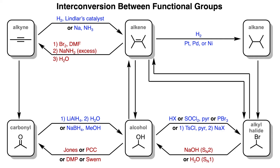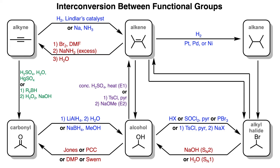To go from an alkyne to a ketone, you can use oxymercuration-demercuration, or to go from an alkyne to an aldehyde, you can use hydroboration-oxidation. To go from an alcohol to an alkene, you can undergo either an E1 or E2 reaction. In the reverse fashion, you can go from an alkene to an alcohol by undergoing either acid-catalyzed hydration, hydroboration-oxidation, or oxymercuration-demercuration. To go from an alkene to an alkyl halide, you can use either HX that follows Markovnikov's rule, or HBr with a peroxide that follows anti-Markovnikov's rule. And then in the reverse, to go from an alkyl halide to an alkene, an elimination reaction could be used.